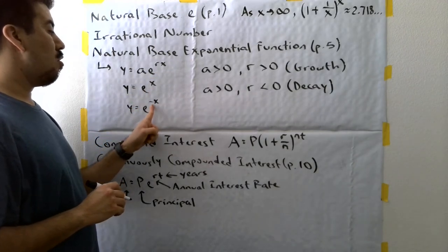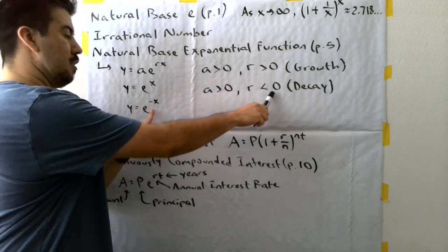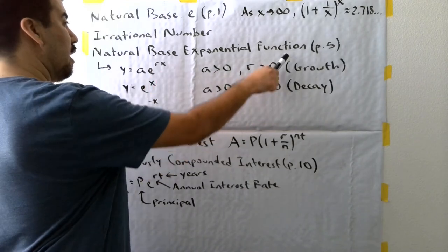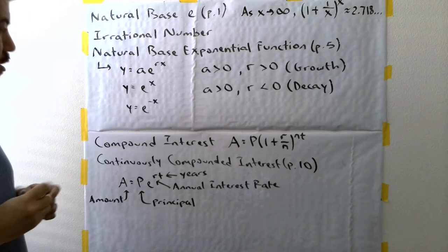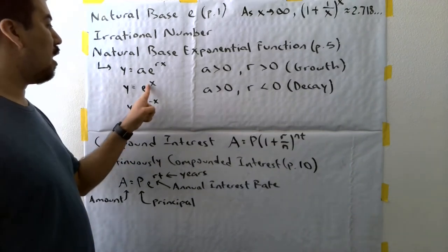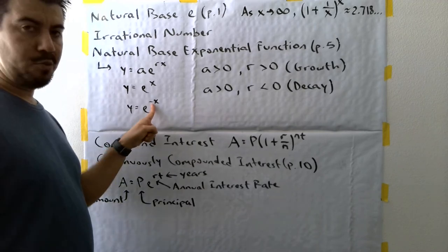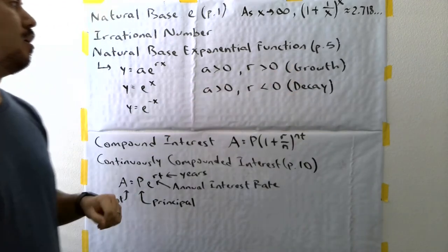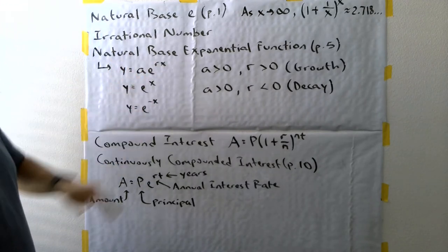Since the R value in front is a negative value, it would be less than zero, negative one in this case, that's an example of a natural base exponential decay function. So the main focus is going to be whether you have a positive exponent with the X or a negative exponent with the X. That's going to determine whether you have a growth or a decay function there. So that covers those things.